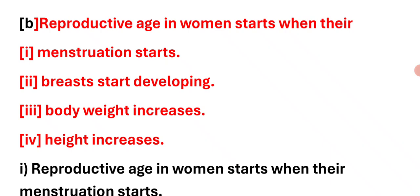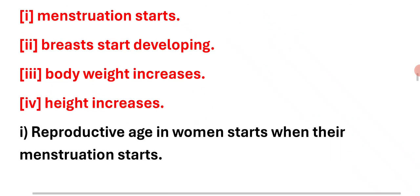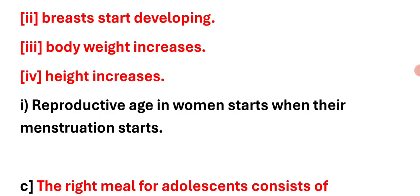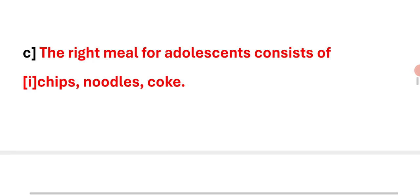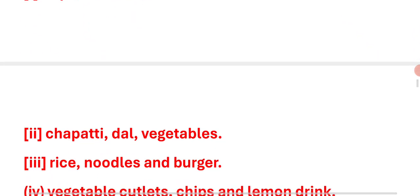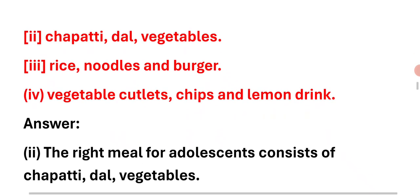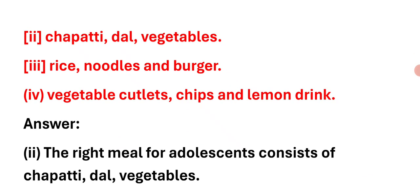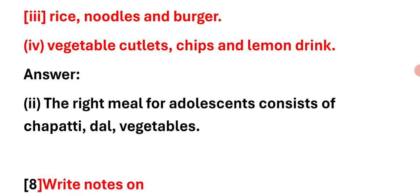Next multiple choice question: Reproductive age in women starts when their menstruation starts. Options: breast start developing; body weight increases; height increases. Right answer: Reproductive age in women starts when their menstruation starts. The right meals for adolescents consist of chapati, dal and vegetables — not chips, noodles, and burgers.